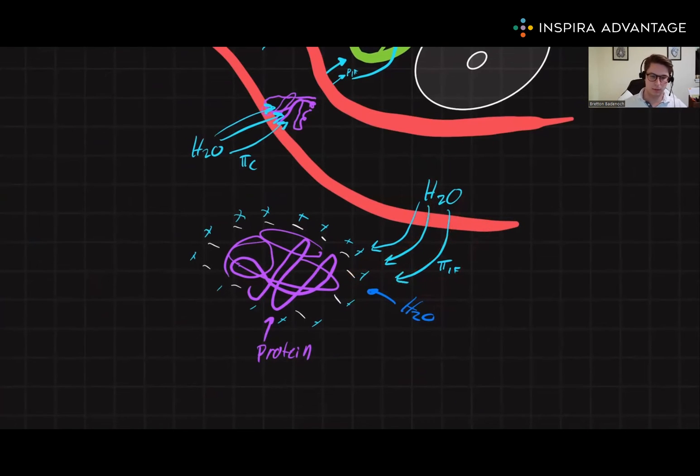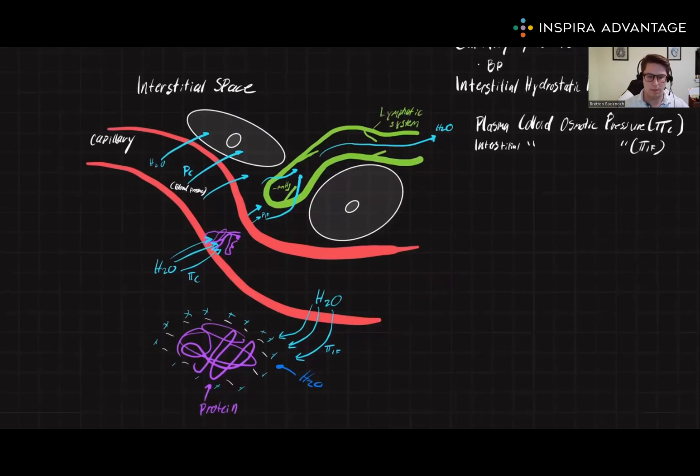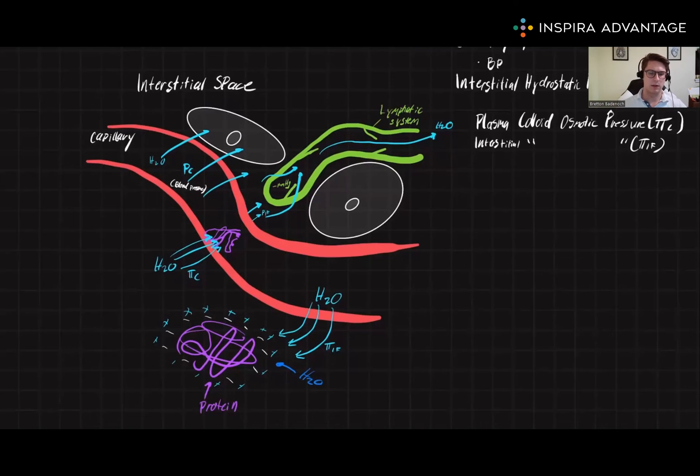This is all osmosis, folks. So we have these four forces. What happens when they are out of balance? Well, if there is too much water moving out of the blood into the interstitial space, this can lead to something called edema.